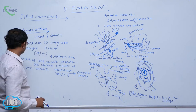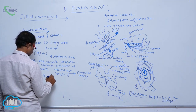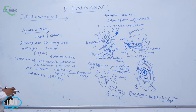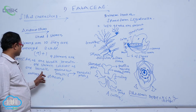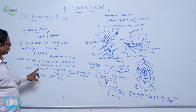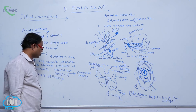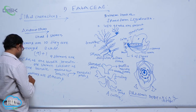Anthers are dithecous. So, to summarize: the whorl of stamens is known as androecium. Stamens are ten, arranged in two whorls — nine plus one. Nine stamens are fused to form one bundle, which is the large bundle. The remaining one stamen forms a separate bundle — that is known as the diadelphous condition. But in ground nut, ten stamens are fused, which is known as monodelphous. Anthers are dithecous.